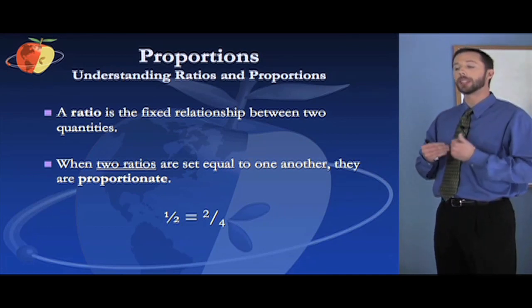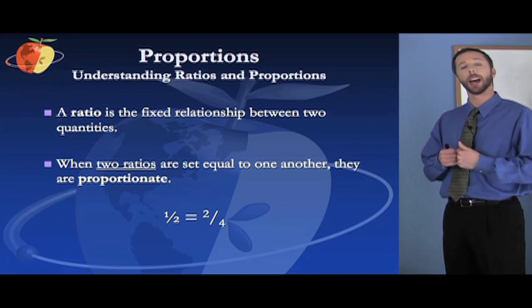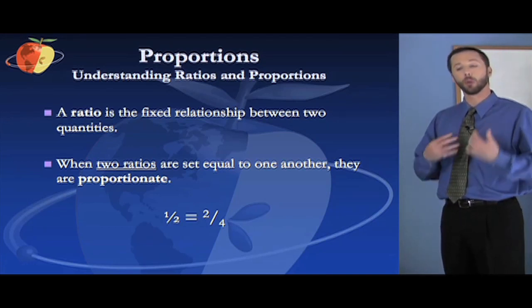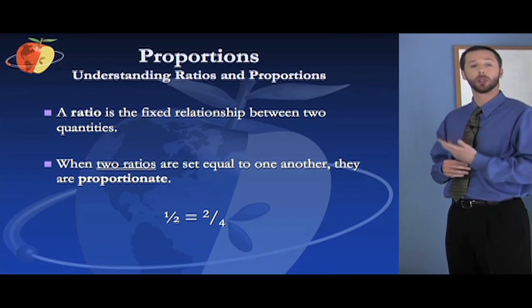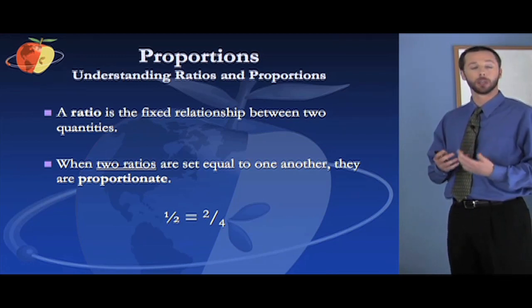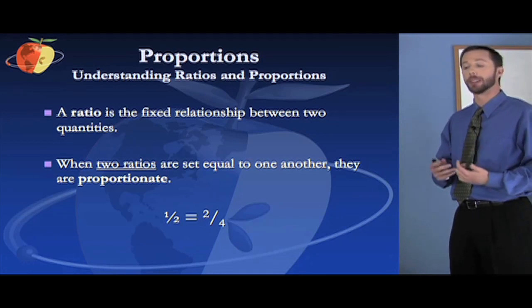When you have two ratios set equal to one another, we call those ratios being proportionate. For example, one half is proportionate to two fourths. It's the same thing. So one half and two fourths, same value, just different way of expressing that.